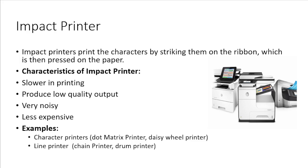Impact printers work like a typewriter and use electromechanical technique to print output on paper. Some characteristics of impact printers are: they are slower in printing and produce low quality output, they also produce more noise during printing, and they are less expensive. Examples of impact printers are character printers such as dot matrix and DC wheel, and line printers such as chain printer or drum printer.